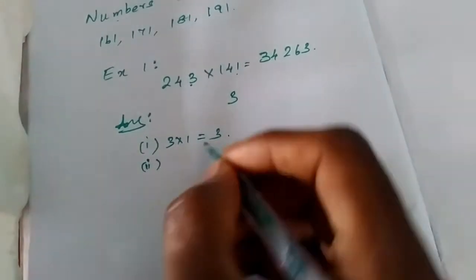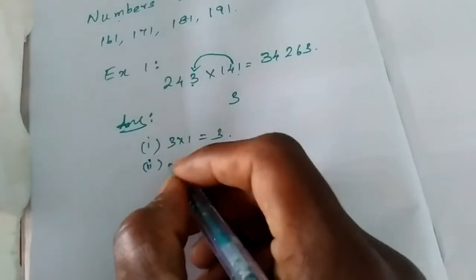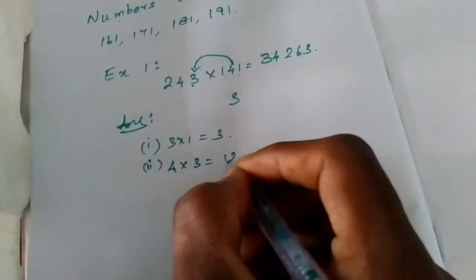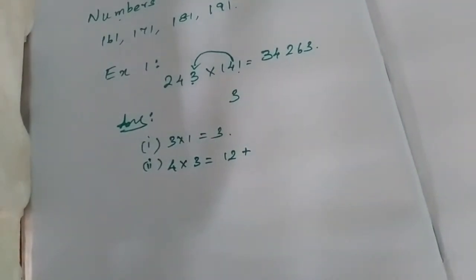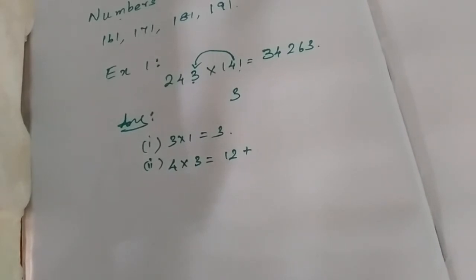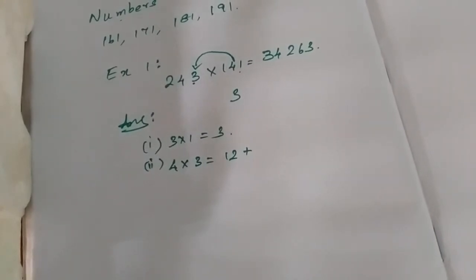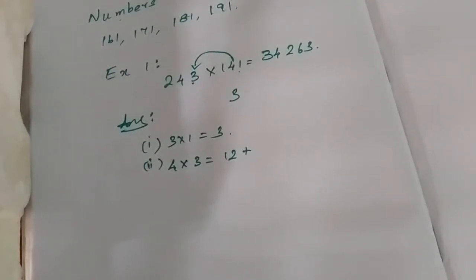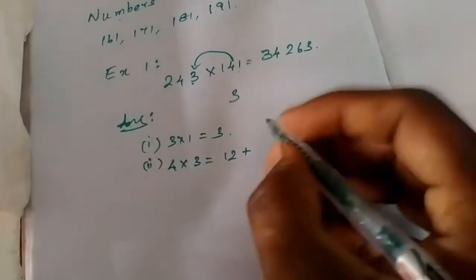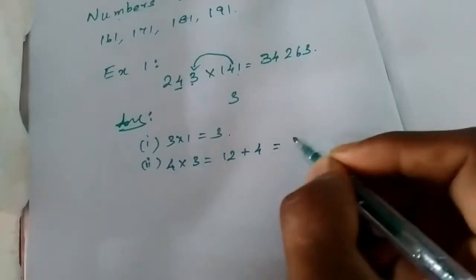Next, second step: if you want to multiply 4, we can multiply 4 and 3. 4 × 3 is equal to 12. The left number is a two-digit number — we add the right side and the left side. Same logic: 4 × 3 = 12, then 4 plus 4 equal to 16.